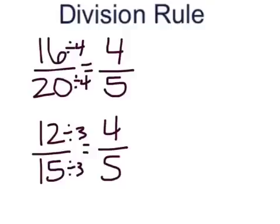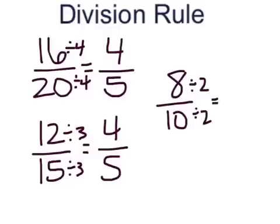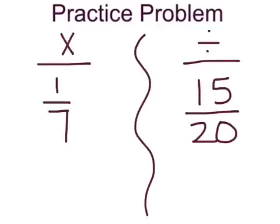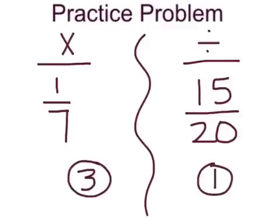Let's look at one more example: eight-tenths. These numbers are both evenly divisible by two, but they have no other larger factors in common. So we are going to divide the top and the bottom by two. Eight divided by two is four, and ten divided by two is five. So an equivalent fraction for eight-tenths is four-fifths. Here is your practice problem of the day: list three equivalent fractions for one-seventh using the multiplication rule, and list one equivalent fraction for fifteen-twentieths using the division rule.